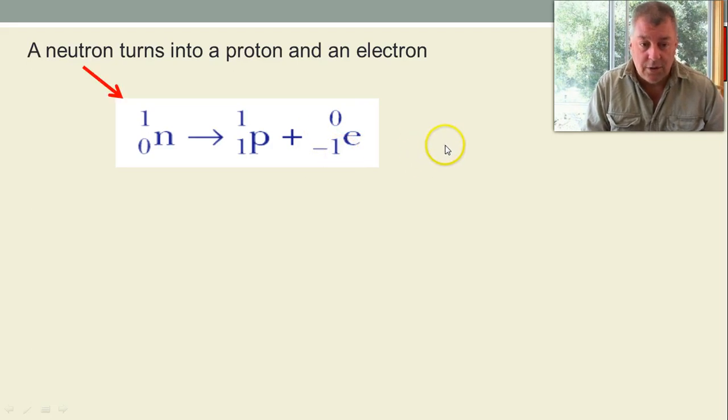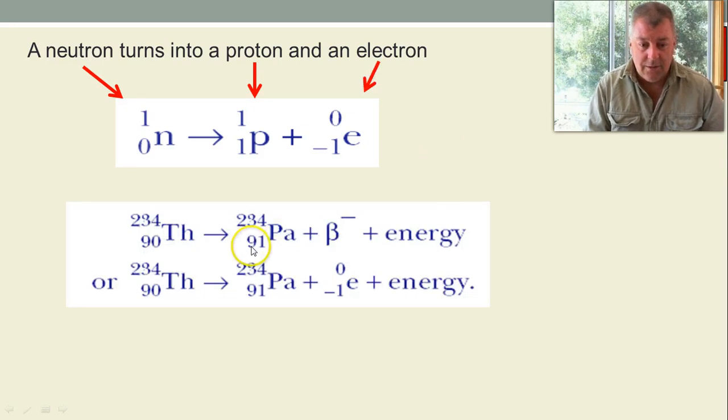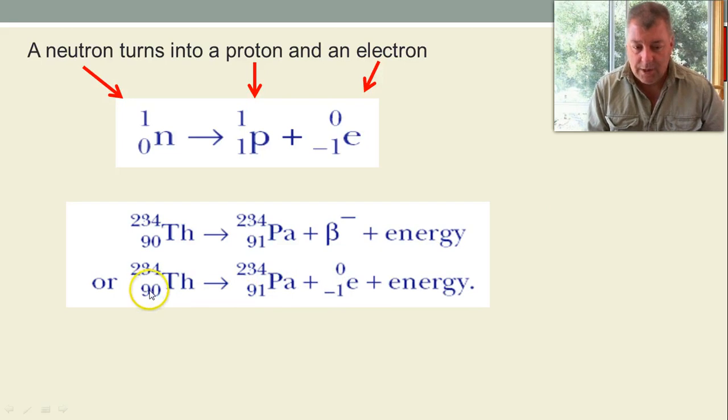Okay, a neutron becomes a proton plus an electron. And so here we can see it. Now here's another symbol for beta, I wouldn't recommend you use this one. Again, use this one down here. This is the preferred version that we use. And you can see that that minus 1 is important, because it's got to add up to 90.